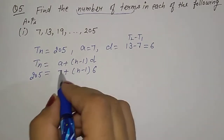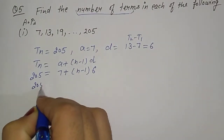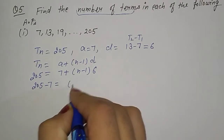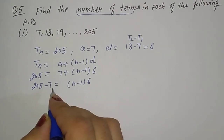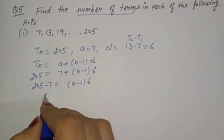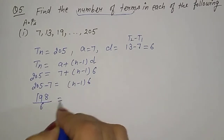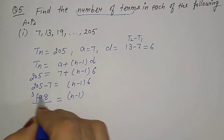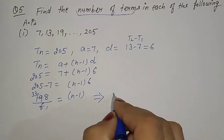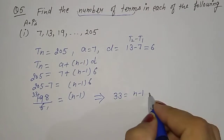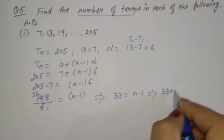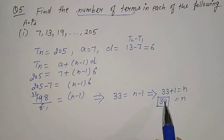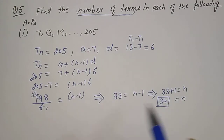Solving: 205 minus 7 = (N minus 1) into 6. That is 198 = (N minus 1) into 6. Dividing: 198 ÷ 6 = 33. So 33 = N minus 1, which gives N = 33 + 1 = 34. It means the number of terms is 34. There are 34 terms in this AP, and 205 is the 34th term.